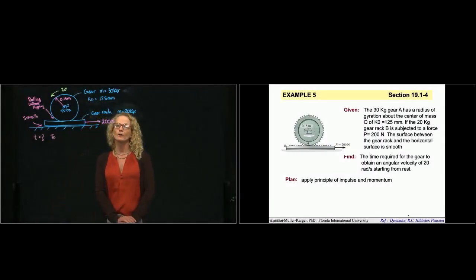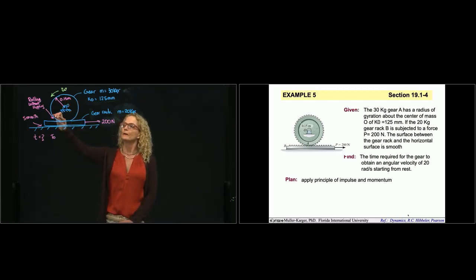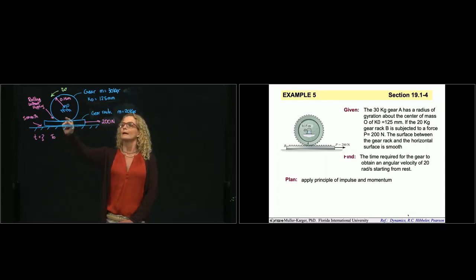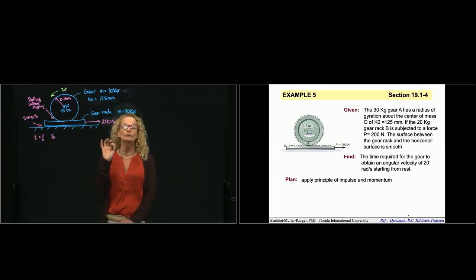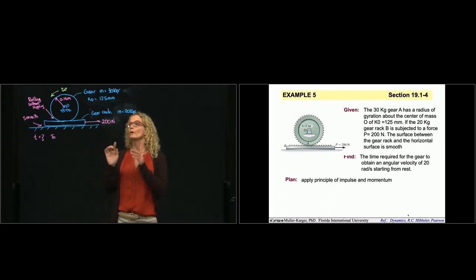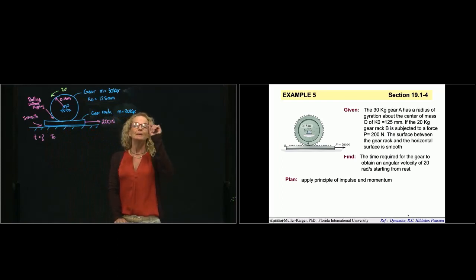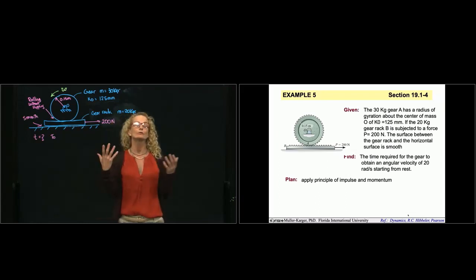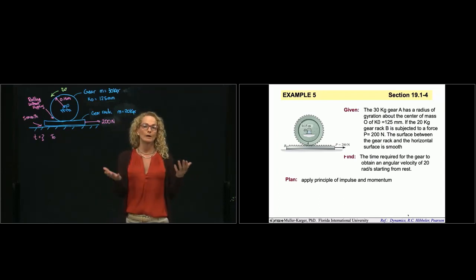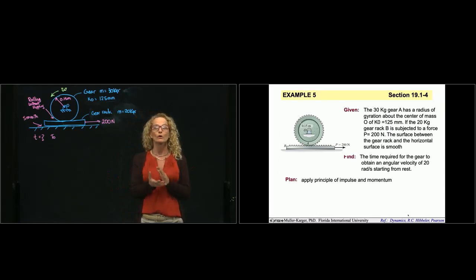This is problem five from chapter 19. We have a gear and a gear rack. Very important to remember that when we have a gear, any surface between two gears always has friction, and it has enough friction not to permit slipping. So we always have rolling without slipping, meaning that friction force will never be the impending motion friction force. We will not assume the force is related to the normal — the friction force is always an independent force we calculate using our free body diagram and equation of motion.